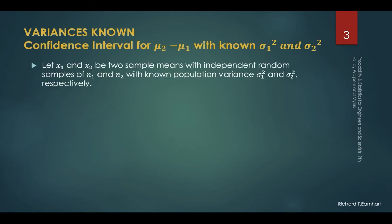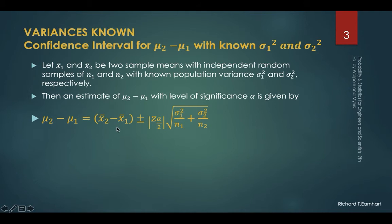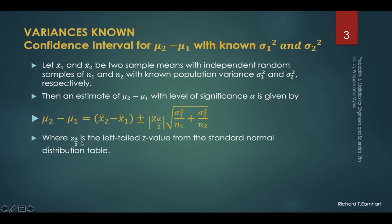The first case is when variances are known. We want to find the confidence interval for the difference between the two population means. We are given two sample means x sub 1 and x sub 2 with independent random sample sizes of n1 and n2, with known population variances sigma 1 squared and sigma 2 squared respectively. An estimate of the difference between these two population means with level of significance alpha is given by the following formula, where z sub alpha over 2 is the left-tailed z value from the standard normal distribution table.